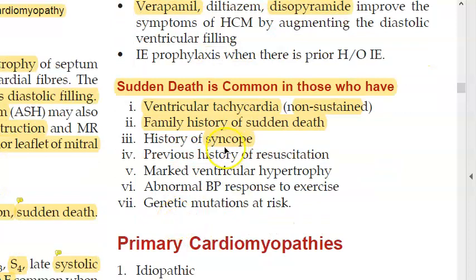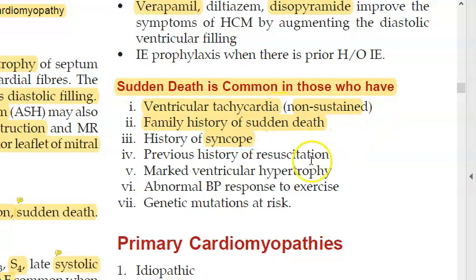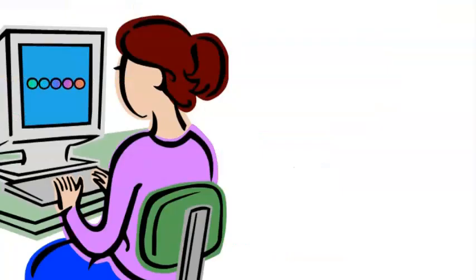Sudden death in HOCM is commonly caused by non-sustained ventricular tachycardia. Atrial fibrillation can occur later, but ventricular tachycardia is the primary cause of death. Family history will be present because HOCM is an autosomal dominant condition.